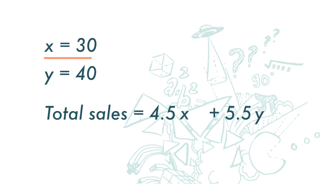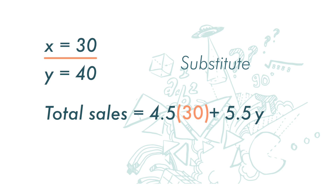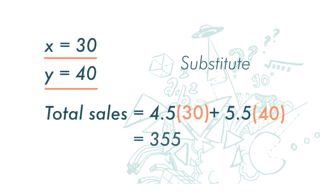We take the value of x is 30 and replace x with 30 — or we say substitute x with 30. Then take the value of y is 40 and substitute y with 40. Then we will get 355 ringgit — that's the total sales for today.